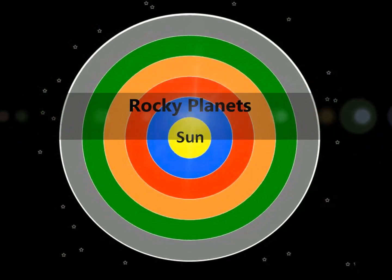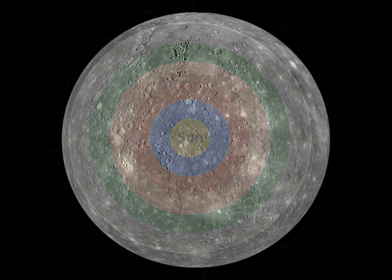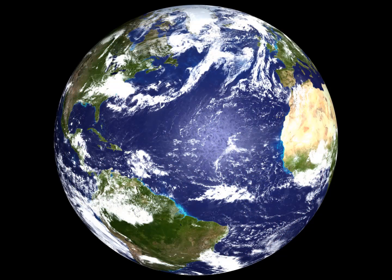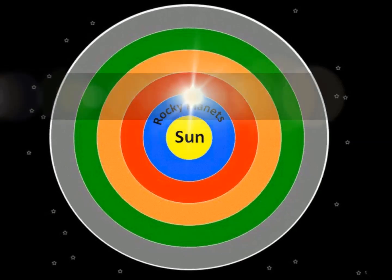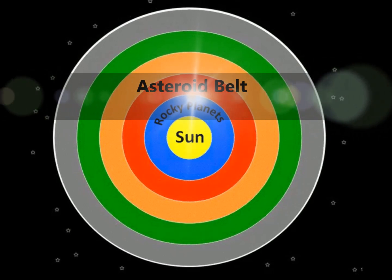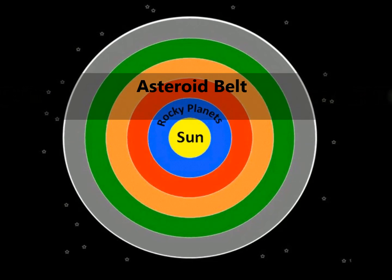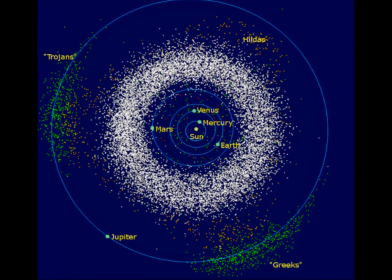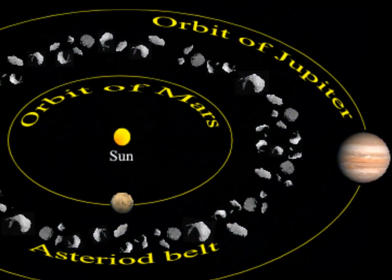The rocky planets — Mercury, Venus, Earth, and Mars — travel along circular orbits. They are medium-sized objects with few moons. The asteroid belt, situated primarily in the region between Mars and Jupiter, consists of small rocks that are on tilted and elliptical orbits.